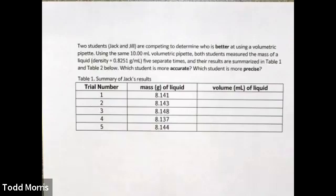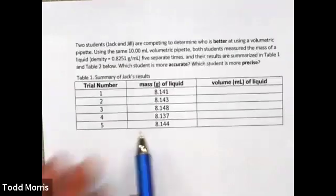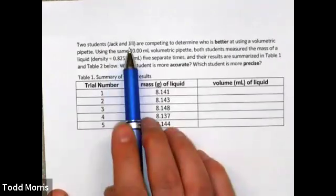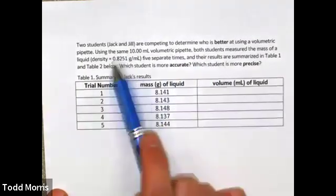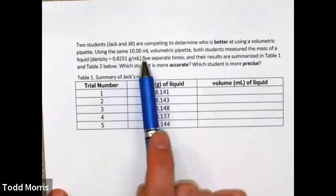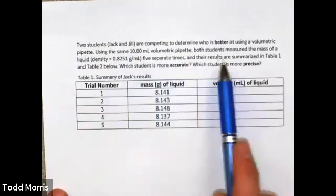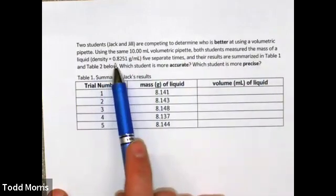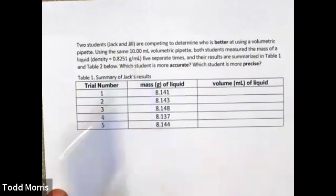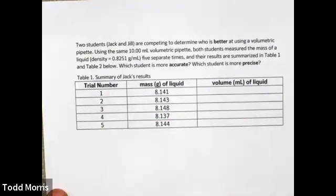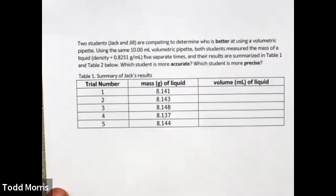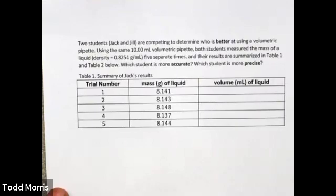In this video, we want to practice some of the calculations that we need for this week's lab. In our story, two students, Jack and Jill, are competing to determine who is better at using a volumetric pipette. Using the same 10 milliliter volumetric pipette, both students measure the mass of a liquid, whose density is known to be 0.8251 grams per milliliter, five separate times, and then summarize the results in the tables below. We want to determine which student is more accurate and which student is more precise.